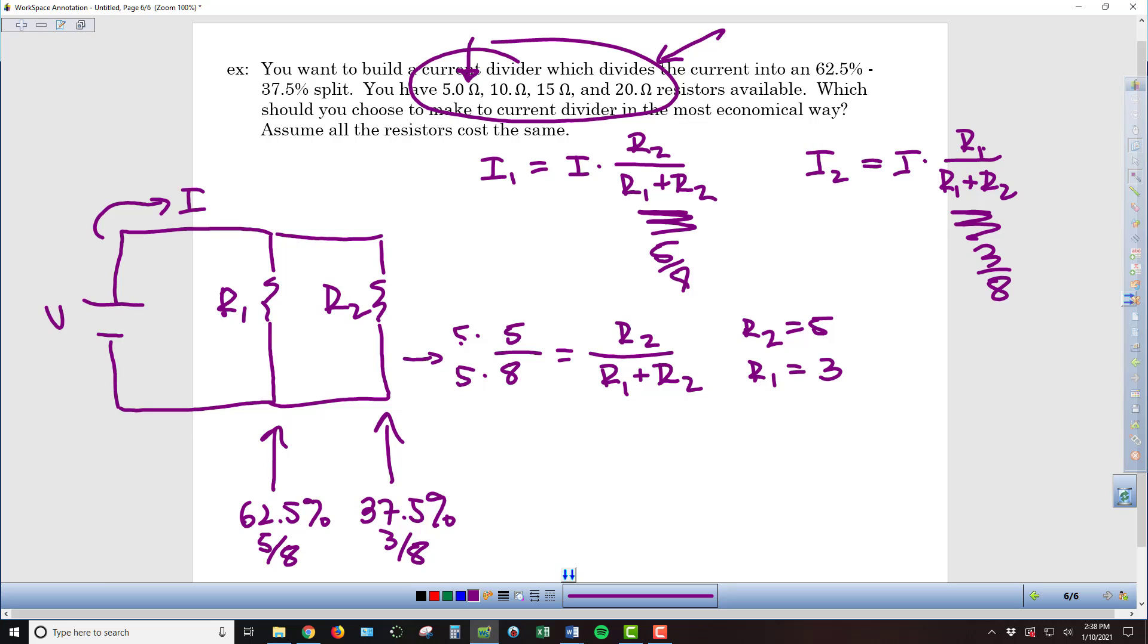And so then I get 25 over 40. And so now R2, we can say, is going to have to equal 25, which means it's going to be composed of some combination of these resistors that will add up to make 25. So I can do, let's say, a 5 and a 20. And then on the bottom, if R2 is 25 and I need it to equal 40.